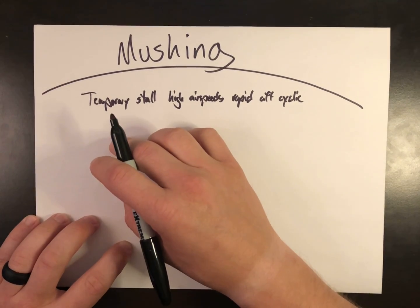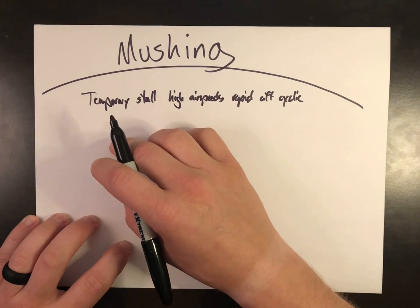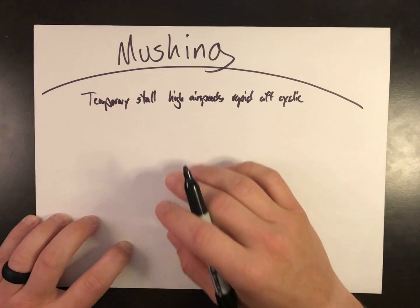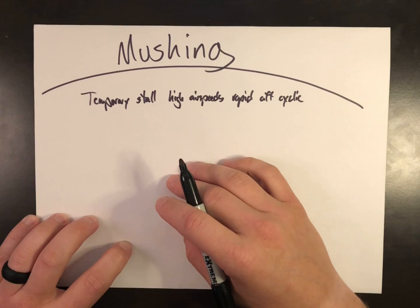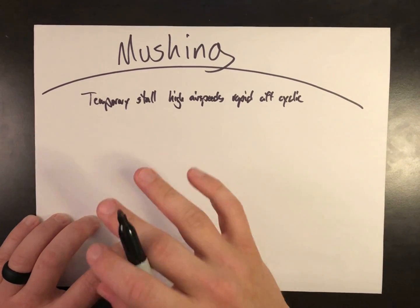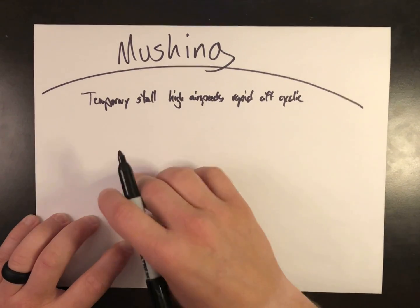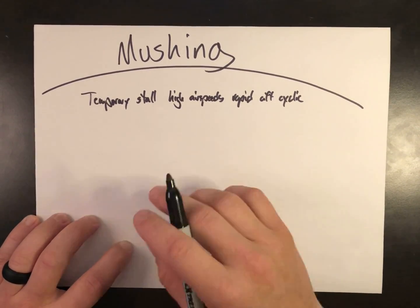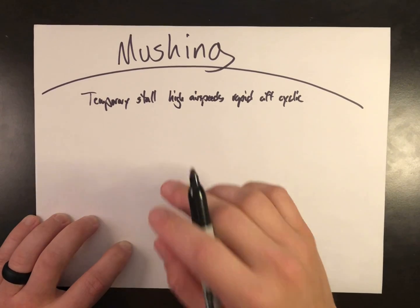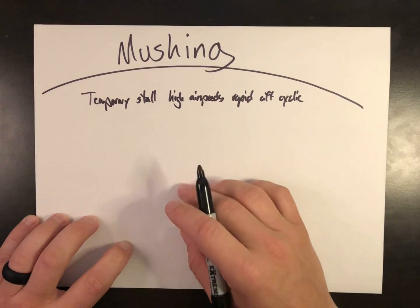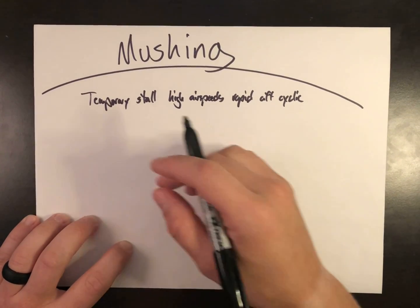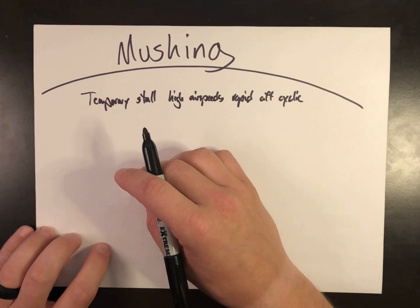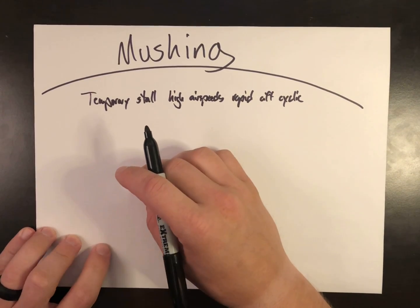I'll use some explanations in this video that pull from my Dissymmetry of Lift Expanded video, so if you want a refresher on those terms or some of them don't quite make sense, just click on the link that appears either in the video or the description and I'll break down parts of the airfoil a little bit more. But let's get started.